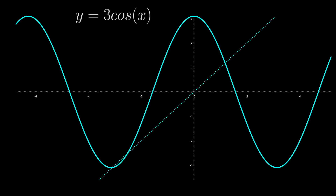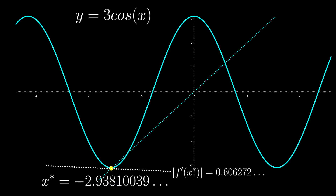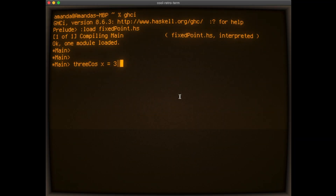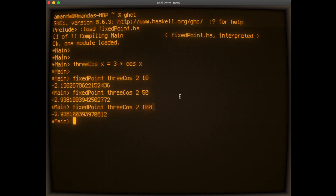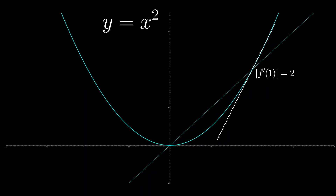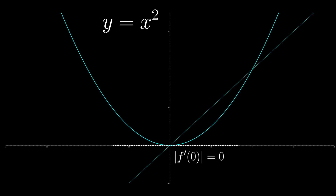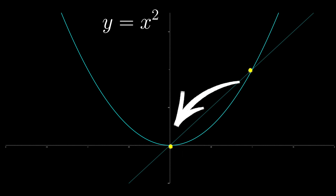We can also look at functions with multiple fixed points. Take 3 times cosine x — it has 3 fixed points. Two of them have a derivative greater than 1, so they are repelling. But this one has a derivative less than 1, so it's an attractor. And because the function is bounded, all values will converge. We can define this function as 3cos in Haskell and run it through our fixed point iterator — it quickly converges to the attractor value. For x squared, the fixed point at 1 has a derivative of 2, so it is repelling. But the derivative at the fixed point at 0 is 0, so all values between 0 and 1 will converge. Here we see how a repelling fixed point can send values either towards infinity or towards an attractor.